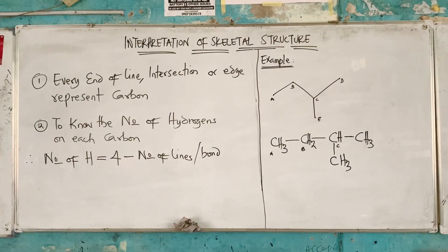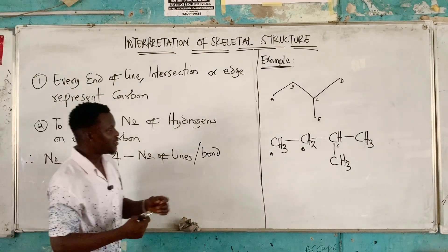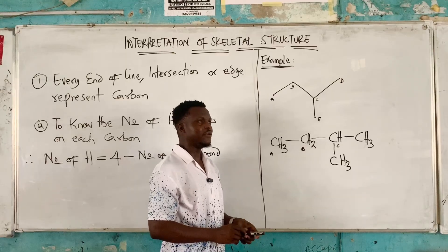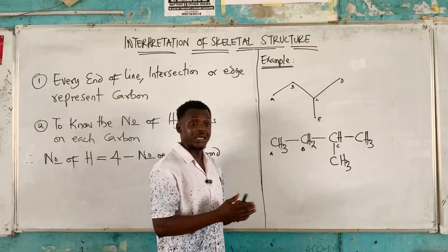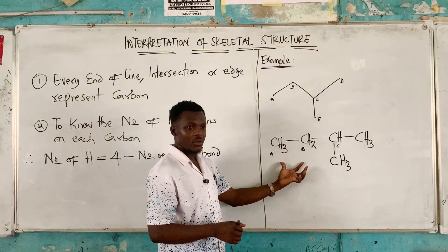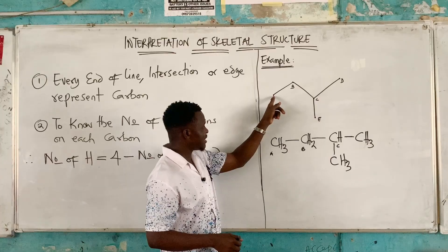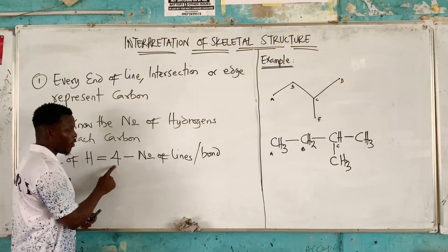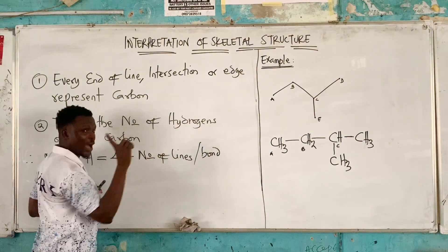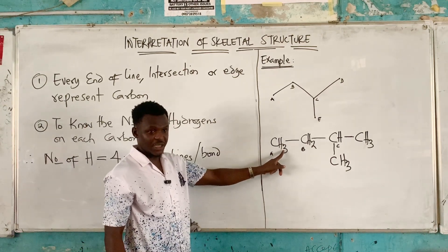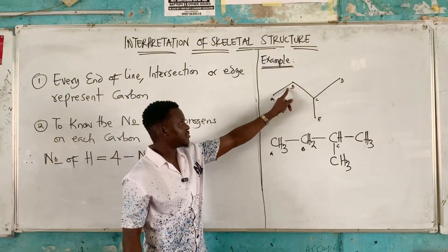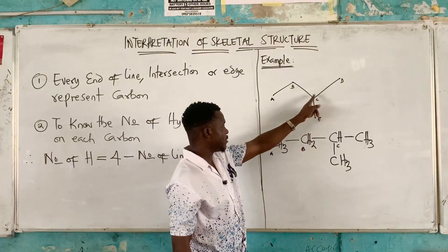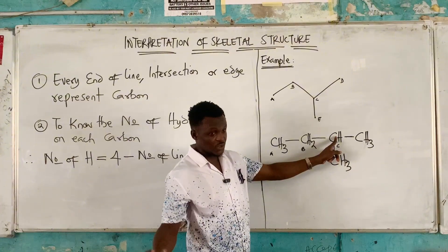We call it skeletal because a skeleton of a body does not have all the components. If you want to transform this from skeletal to normal, you need to add hydrogens. This point is carbon — one line making contact — so four minus one is three, that's why here is CH3. This carbon has two lines: four minus two is two, two hydrogens. Here, three lines: four minus three is one hydrogen.